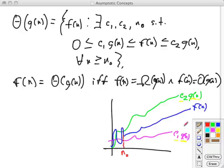When you're doing analysis and you can say something with theta, always use theta if you can, because it gives more information. If you just give a big O, you're only giving the upper bound. If you just give omega, you're only giving the lower bound. Theta gives us more information.